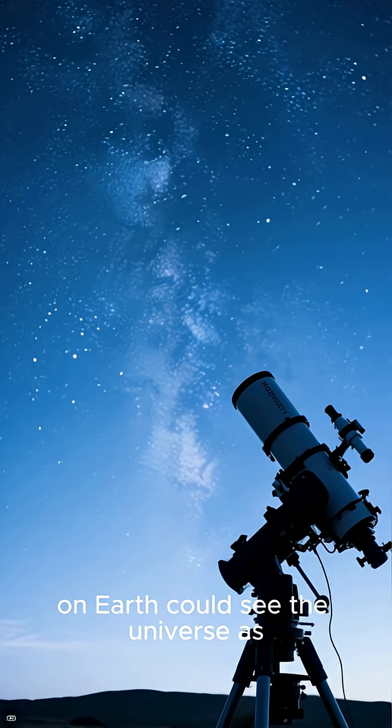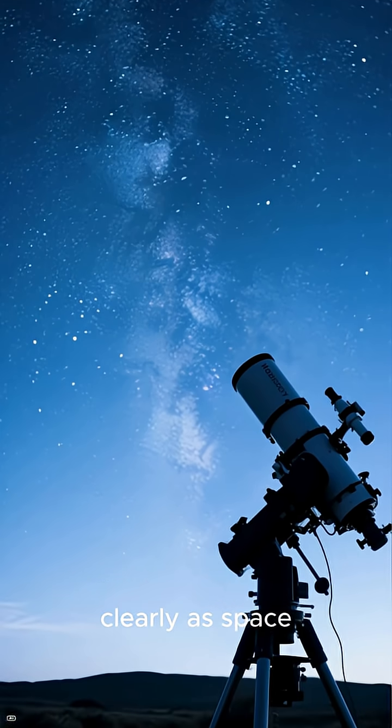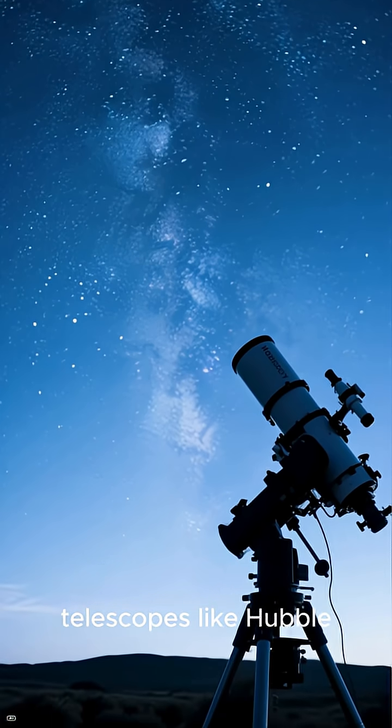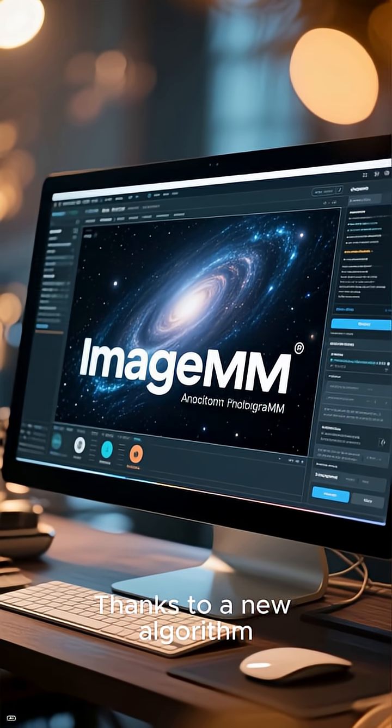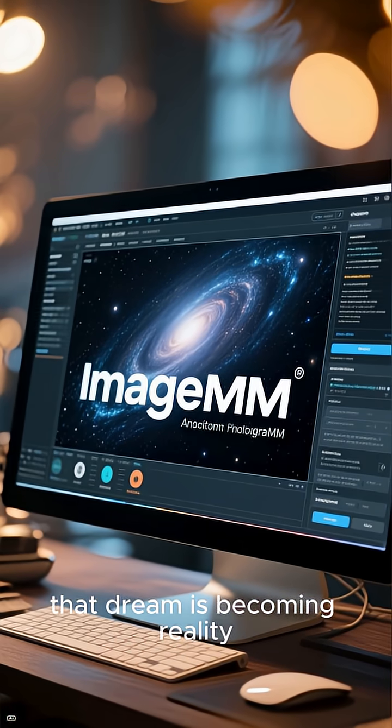Imagine if telescopes on Earth could see the universe as clearly as space telescopes like Hubble. Thanks to a new algorithm, that dream is becoming reality.